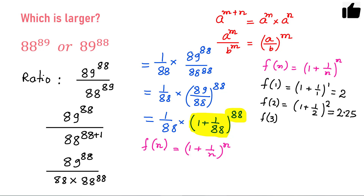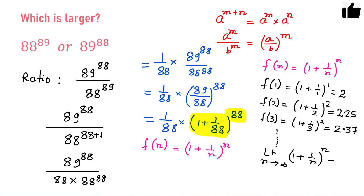Similarly, f(3) — you can calculate this is 1 plus 1 over 3, raised to the power 3 — that is 1.33 cubed, so this is approximately 2.37. If you keep going and n tends to infinity, you reach a limiting situation. If n is a very large number, the limiting value of this expression equals E, and the value of E is 2.718282.